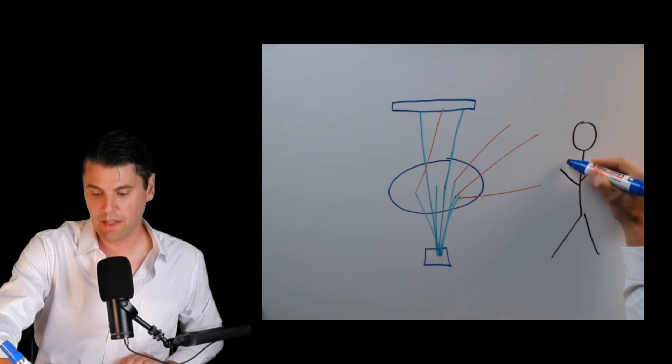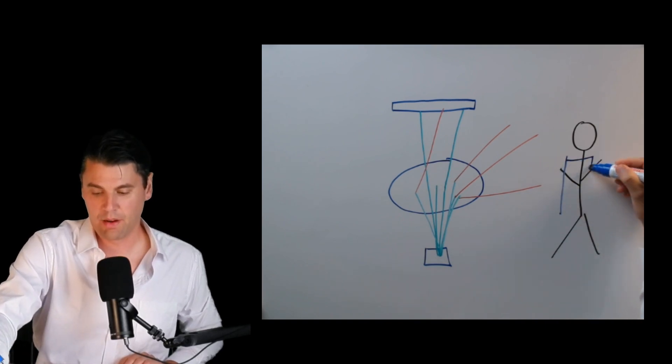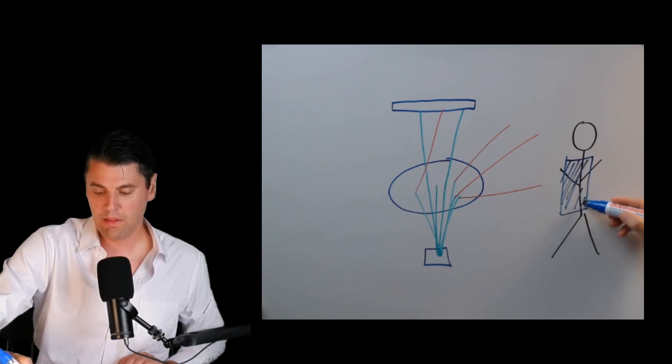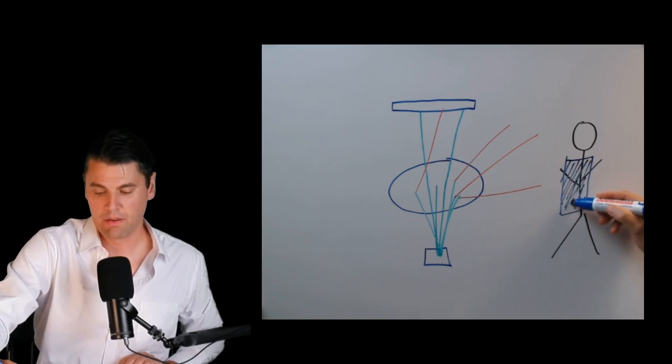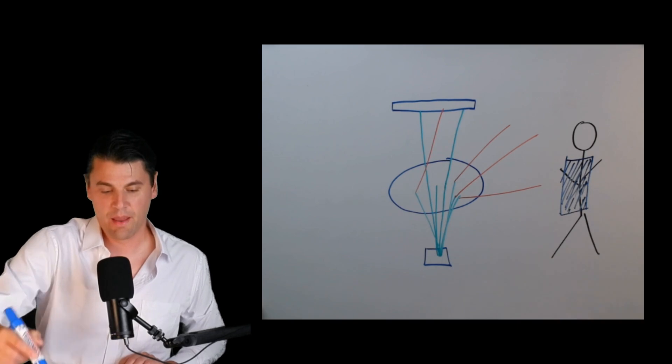If we think about shielding, if we put on a nice little apron right here, what would we like this apron to be made out of? And how thick does this apron need to be?